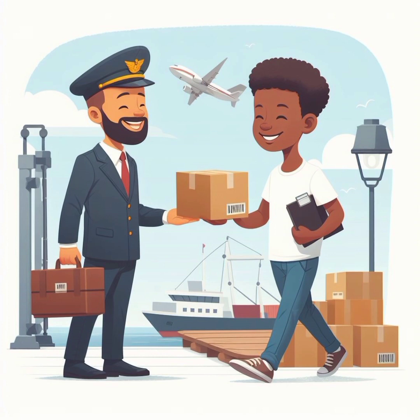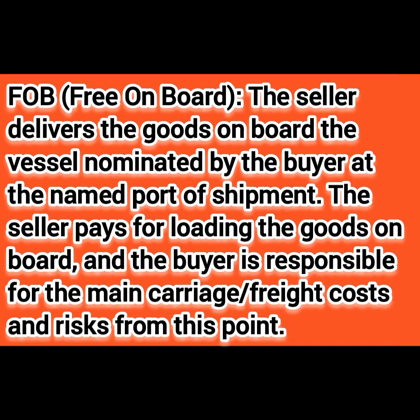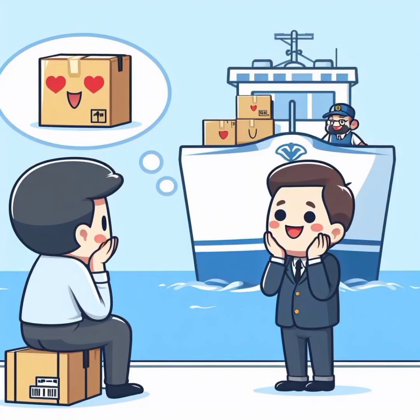In FAS, the seller is not responsible for any freight or risks involved once goods are alongside the ship; the buyer is responsible for main carriage, freight cost, and risk from that point. The next clause is FOB — Free On Board — meaning the seller is free after the goods have been delivered on board the ship. The seller delivers the goods on board the vessel nominated by the buyer at the named port of shipment, pays for loading, and the buyer is responsible for main carriage, freight cost, and risk from that point.